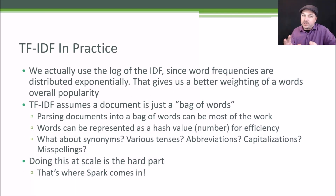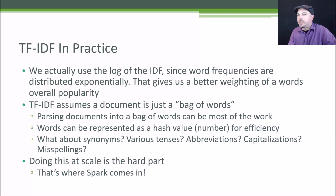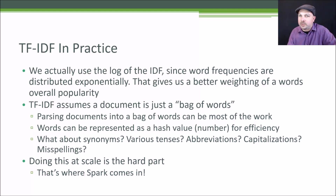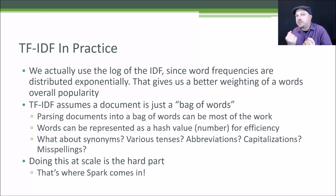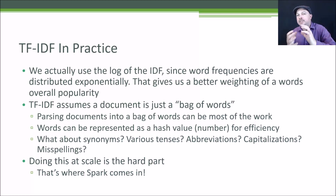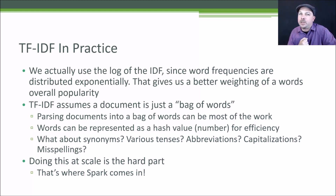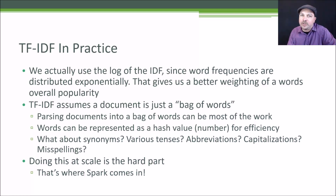In practice, there are a few nuances. We use the actual log of the inverse document frequency instead of the raw value, because word frequencies in reality tend to be distributed exponentially, so taking the log gives a slightly better weighting of words given their overall popularity. There are some limitations: we basically assume a document is nothing more than a bag full of words with no relationships between the words themselves. Parsing words can be a large part of the work because you have to deal with synonyms, various tenses, abbreviations, capitalizations, and misspellings — this gets back to the idea of cleaning your data being a large part of your job as a data scientist, especially in natural language processing. Fortunately, there are libraries that can help, but it is a real problem that will affect the quality of your results.